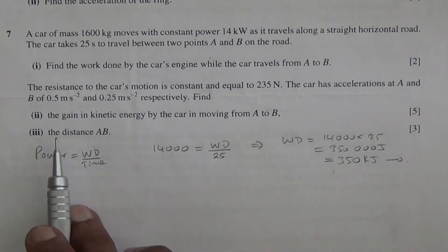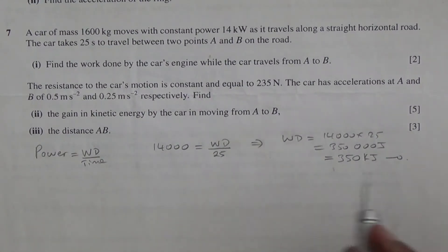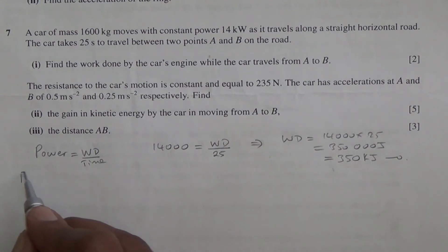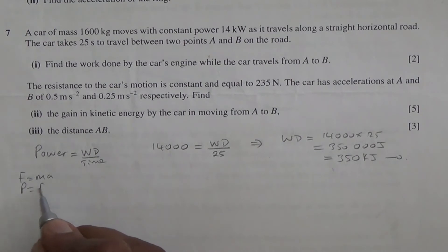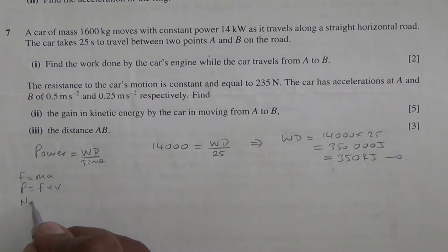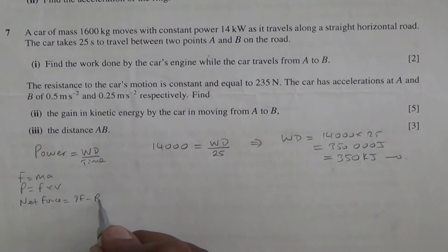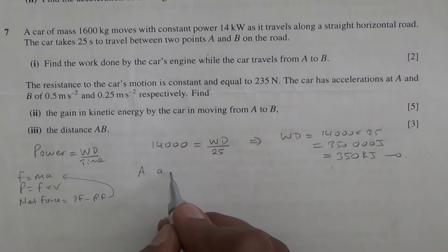Moving on to the second part, that is gain in kinetic energy by the car moving from A to B. Now first of all, what we should realize is that force is equal to mass times acceleration. And we have power is equal to force multiplied by velocity. Also, the net force is equal to the driving force minus the resistive force. And all of that is basically mass times acceleration. Now the information we have is that at A, the acceleration is equal to 0.5 meters per second squared.